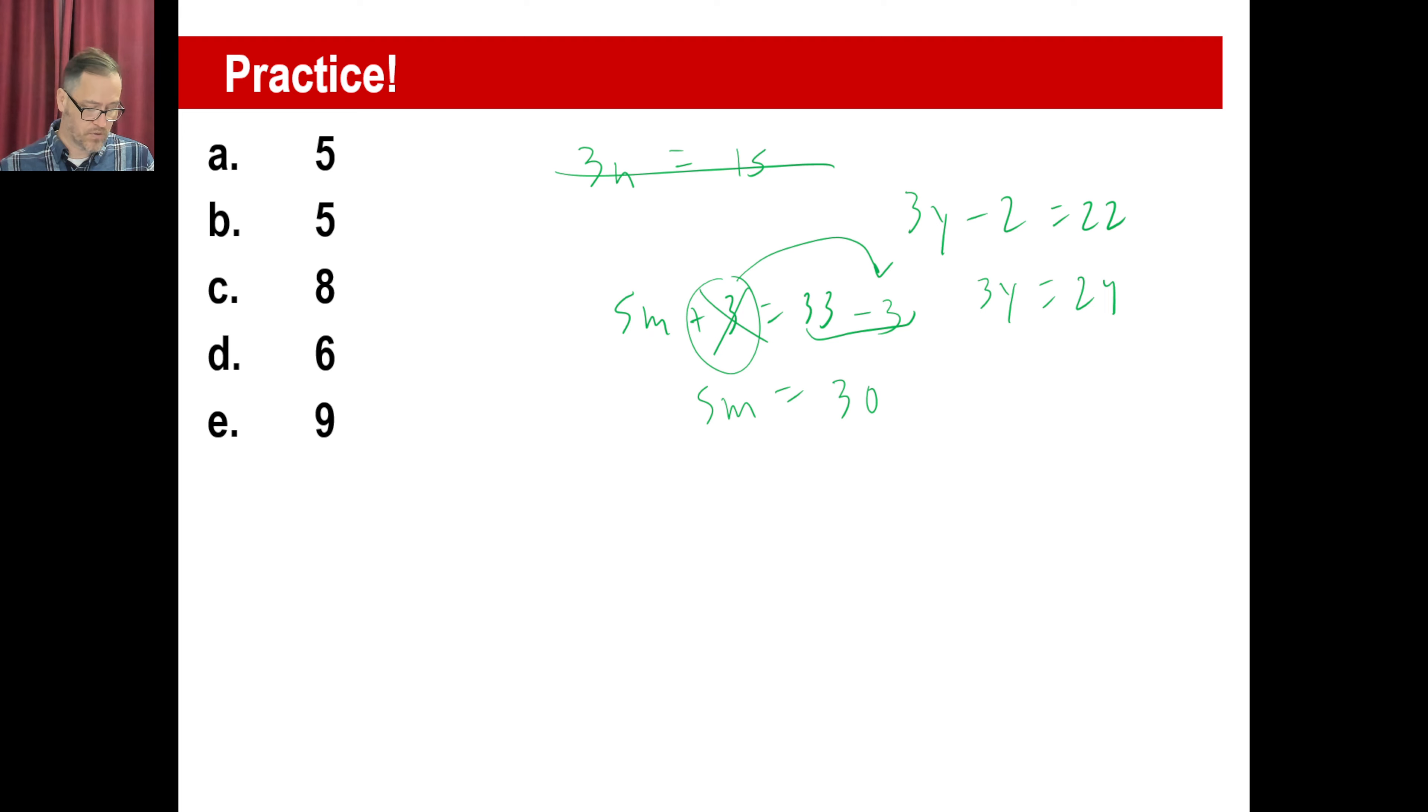Last one, 7a plus 4 equals 25. If you want to move the 4 over or if you want to think, okay, some number, if you add 4 to it, gives you 25. What's the number? 21. So 7 times what number is 21? 3. Okay. All right. See you guys next time. Have a great day.